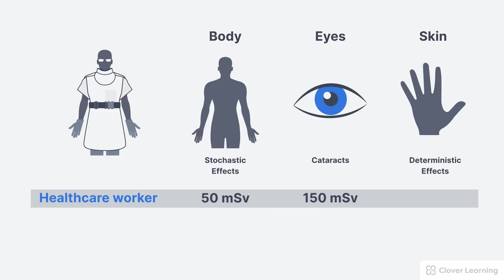This dose limit is much higher than the whole body dose limit because cataract formation only takes place at much higher doses. The annual skin and extremity dose limit is even higher at 500 millisieverts. The purpose of this limit is to prevent deterministic effects, which are only possible at very high doses.